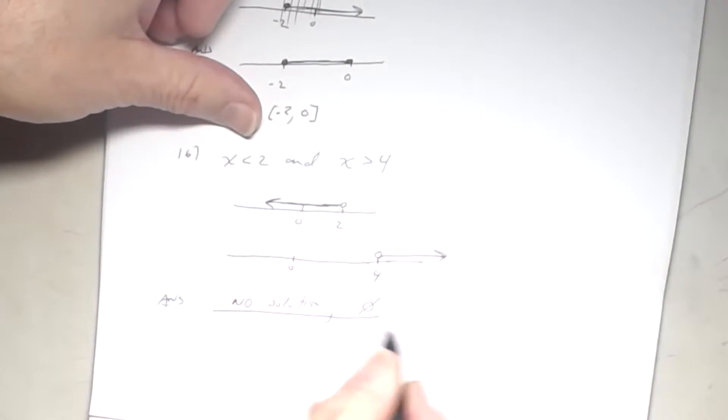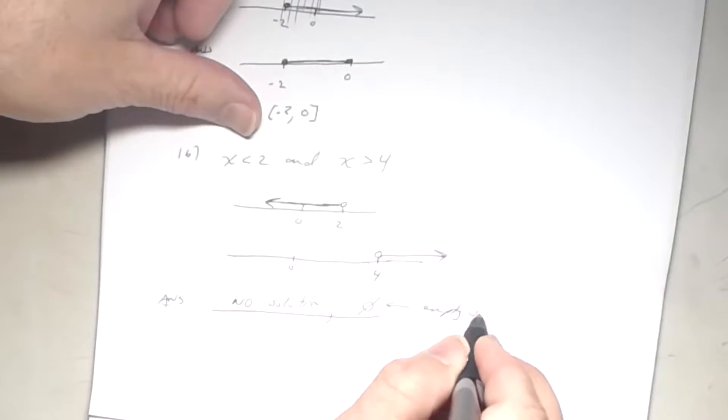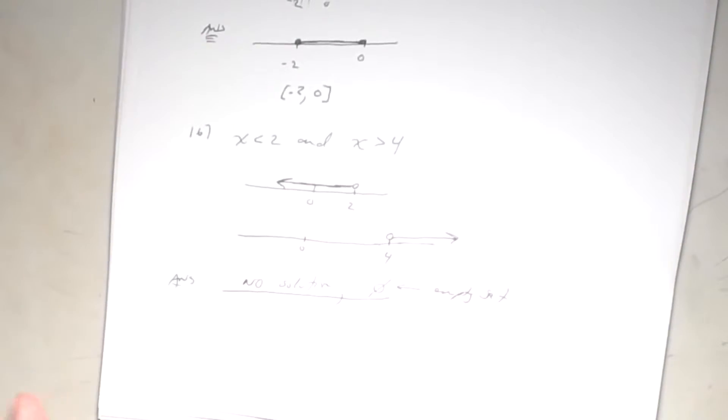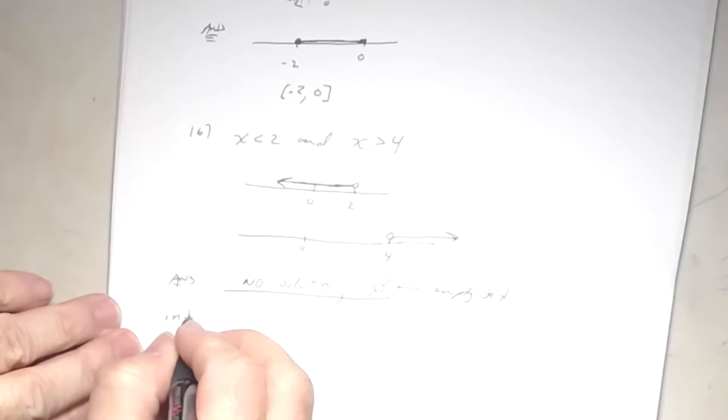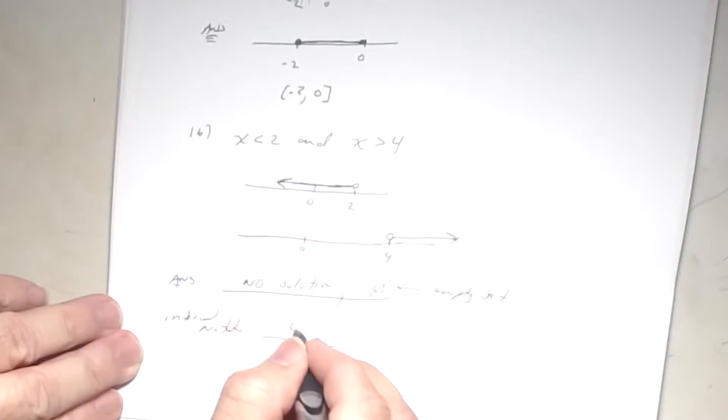You can write 'no solution' or use the empty set symbol — a circle with a line through it. MyMathLab will likely use the empty set symbol, so know both. There is no interval notation because there's no solution; if there's a blank for interval notation, just write empty set or no solution. That was number 16.